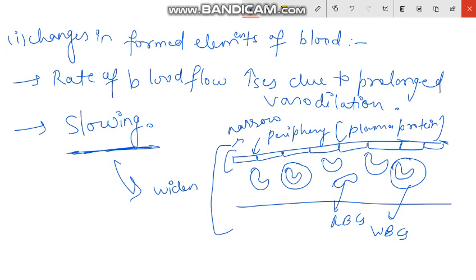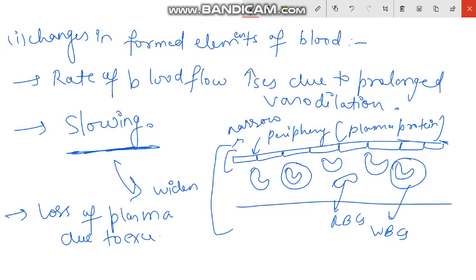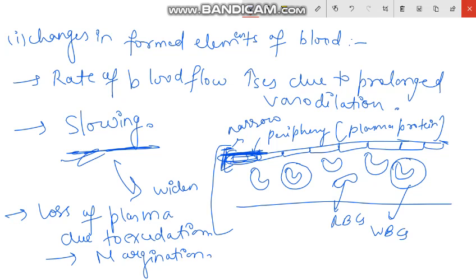When there is loss of plasma due to exudation — plasma moves from blood vessels to extracellular spaces — the periphery becomes narrower during slowing of blood. WBCs then move toward the endothelial cells at the periphery. This phenomenon is called Margination.